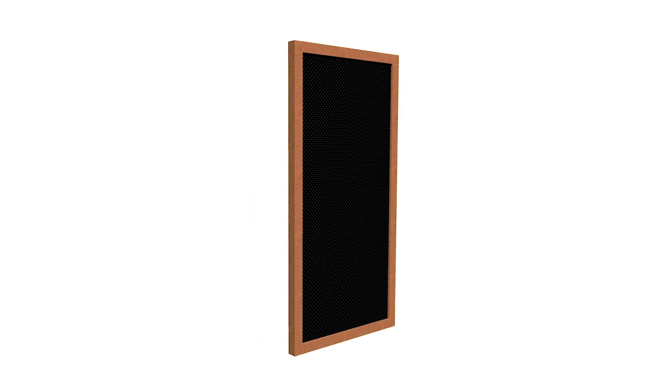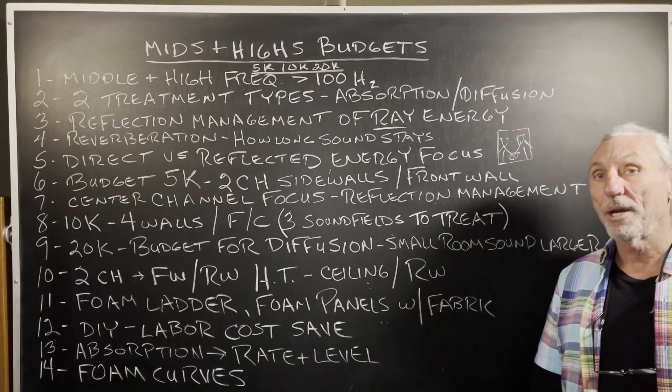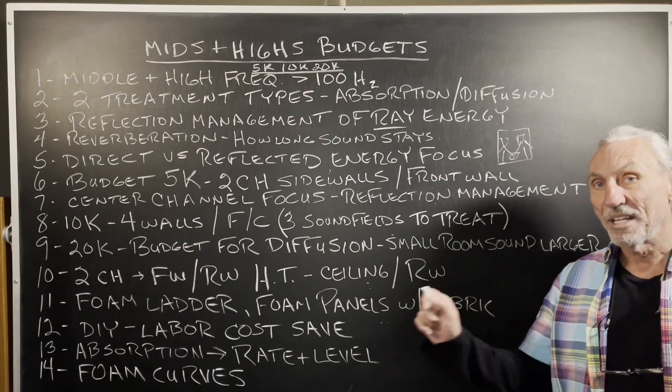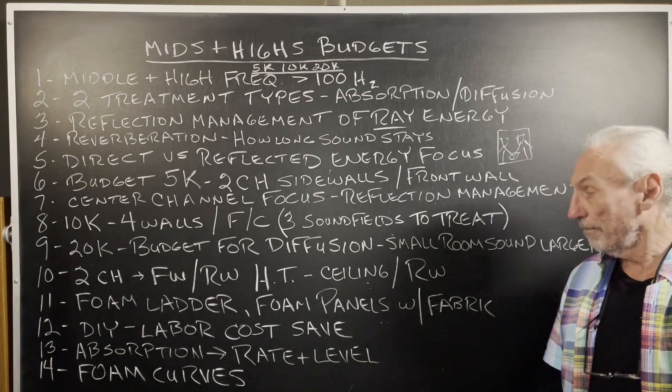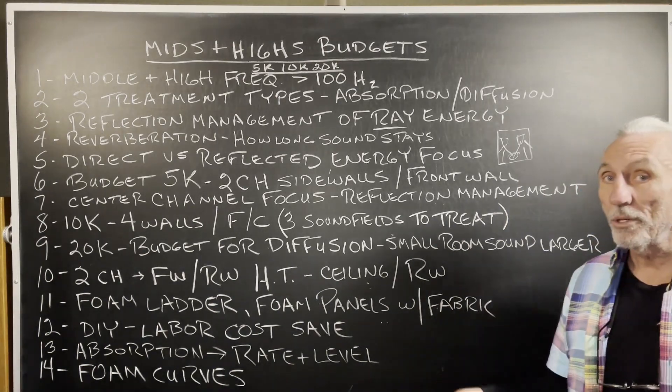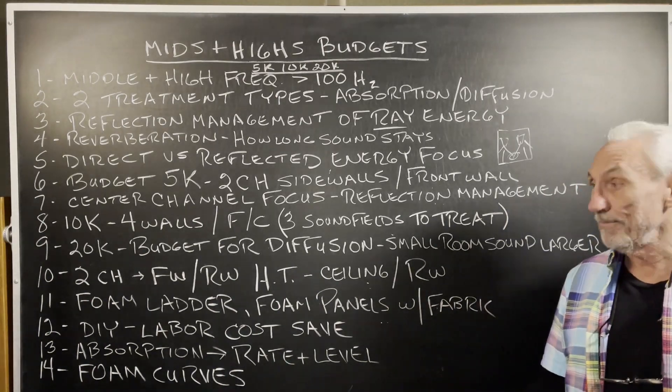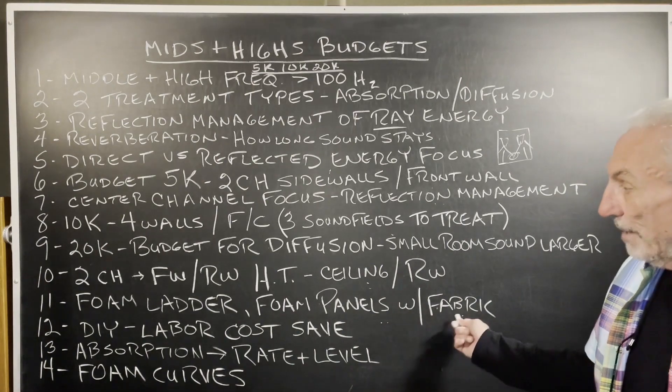Two products: we have the foam ladder, which is very popular — that's just our foam technology with a wood frame around it. Foam panels get a little fancier when you put fabric on it, which is obviously more expensive. Fabric is expensive and you have to use a specific kind that has proper air permeability — enough air through so the units can perform properly, because they work on airflow.